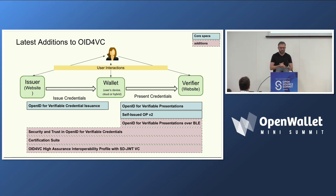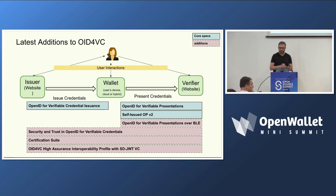The unique feature of verifiable credentials is you can use them in all different sorts of scenarios — online as well as proximity — and that should be seamless. We also have a security and trust document maintained by Daniel Fett, who you saw in the SD-JWT presentation. There is also a certification suite under development. Right now we are able to test the presentation interface of a wallet, and it has already been used by three wallets.